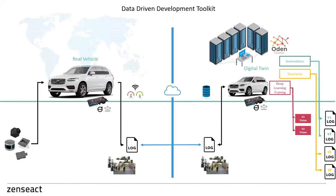We can consider resimulation as a digital twin of the real vehicle. We fetch log files from the real world fleet, ingest that data through the cloud to the backend. Apart from resimulation we also do simulation — using real traffic data and creating variations to increase the scenario space to argue for a safe function. The third workload is deep learning training, which is very compute-heavy, requiring continuous data from the fleet to train our vision algorithm to understand the dynamic world and evolve with the environment.